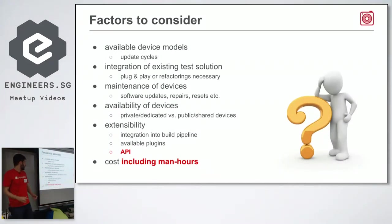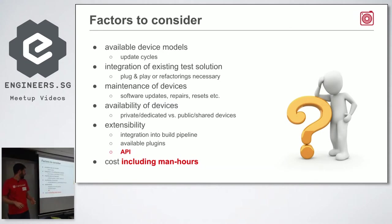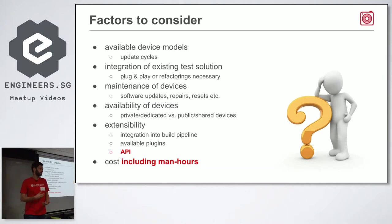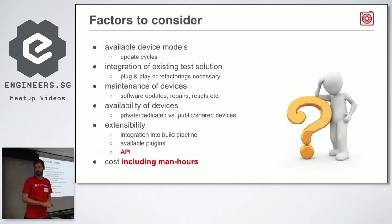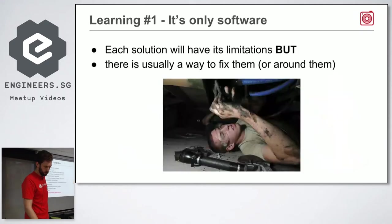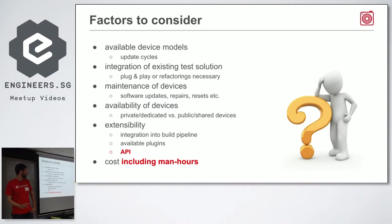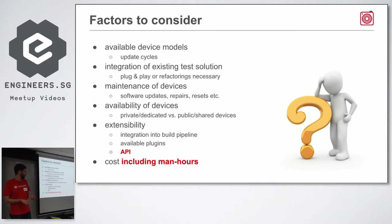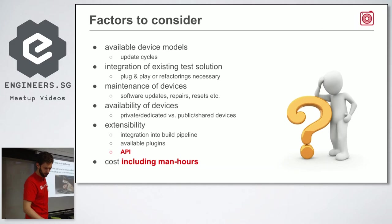Extensibility: how easy does it integrate into a build pipeline? Are there plugins? Is there a good open source community? And most importantly - does it have a good API? A cloud solution without an API that doesn't support something you need means you're kind of lost. We evaluated providers like BrowserStack, BitBar, P Cloudy, AWS Device Farm, and a couple of others.